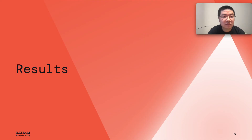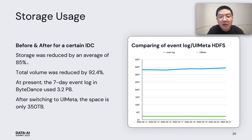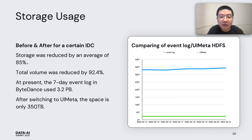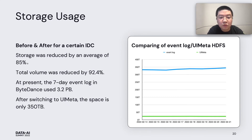Let's show the results. After switching to UI Meta in ByteDance, the result shows an average reduction of 90% in storage. In one of our Spark clusters, it only took 350TB to persist 7 days of snapshot files instead of the previous 3.2 petabytes of event log files.